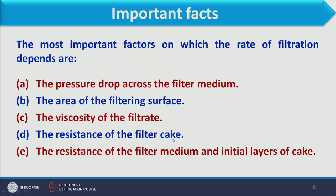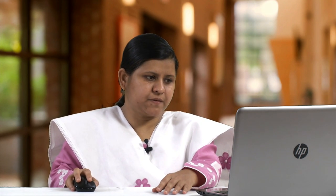Next is the resistance of the filter cake — the thickness of the cake offers resistance, so cakes should be removed after some time. Finally, there is the resistance of the filter media and initial layers of the cake. When the slurry first contacts the filter media, an initial layer is formed that also works as a filter medium because it blocks other particles and liquid. So resistance is offered by the initial layer, the filter media itself, and the total thickness of the cake.